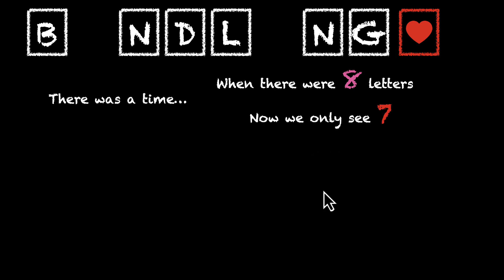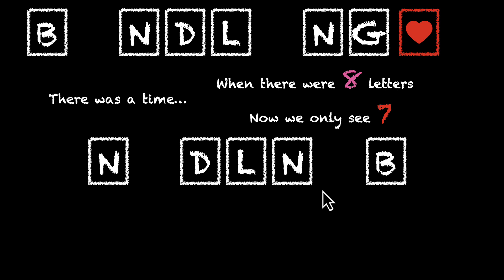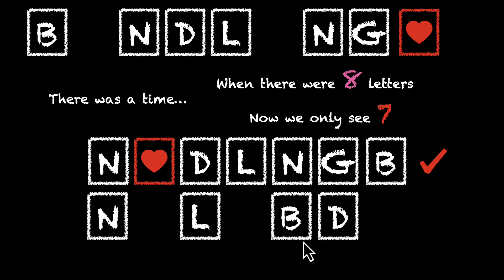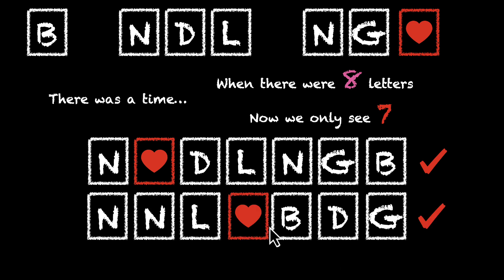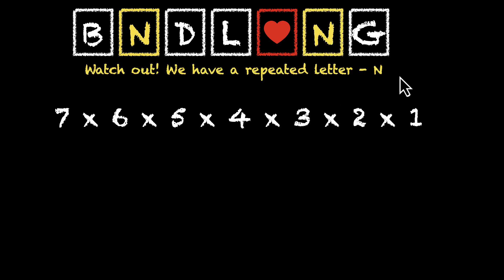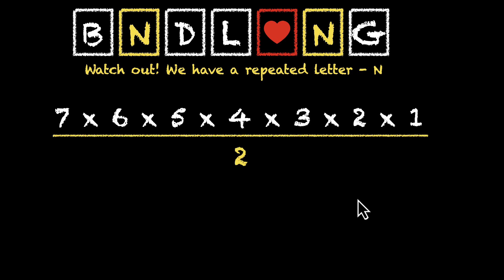Let's rearrange them. Let's take an example: B, N, D, L, N, G, and then heart. This works because U and I are together. Let's take another one: B, N, D, L, N, G, and then heart — this also works for us because U and I are together. So when you're seeing this heart, imagine U and I are sitting next to each other. How many total arrangements can we get? Well, if your answer is 7×6×5×4×3×2×1, you're only partially right. You might have missed this N that is also repeating. So watch out for these things — we have a repeated letter N, which means we need a correction. So we divide by two, and now we have the correct answer.